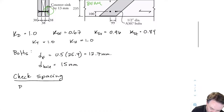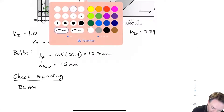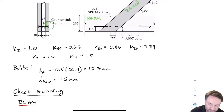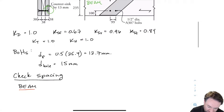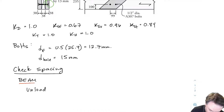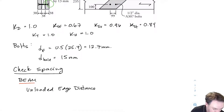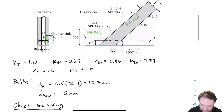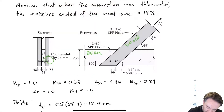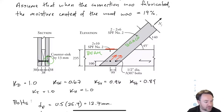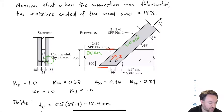In most of this problem, we're going to separate by the beam and the brace. The beam is the horizontal piece; the brace is the piece on the diagonal. Let's check the beam first. For unloaded edge distance — from the point of view of the beam, the bolts want to move upward, towards the top edge. So the top edge is the loaded edge, and the bottom edge is the unloaded edge. That means our unloaded edge distance is 100 millimeters.